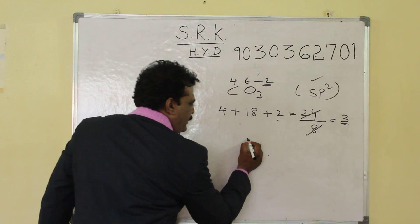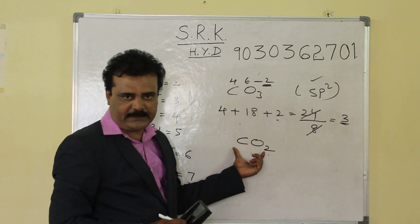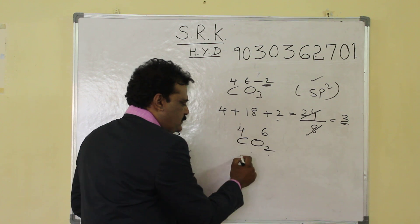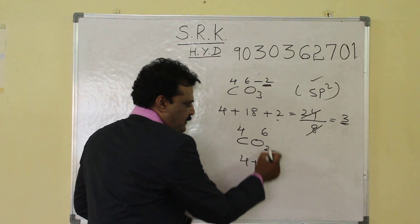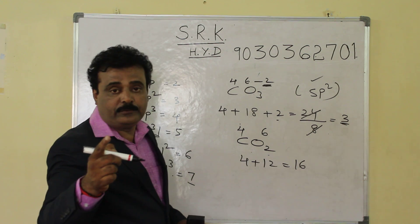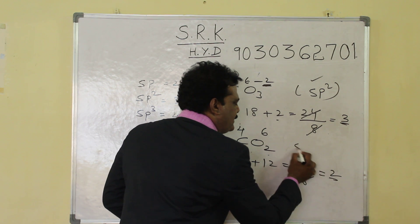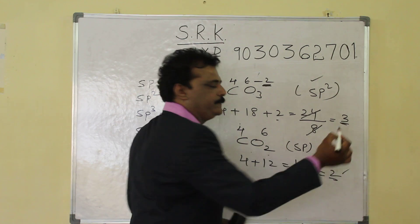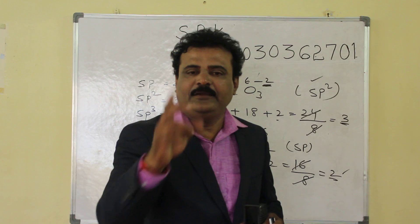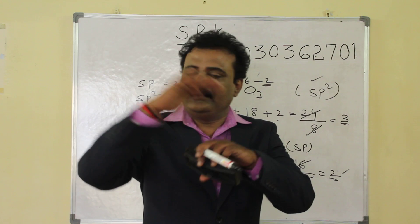One more example: carbon dioxide, CO2. Carbon belongs to the 4th group and oxygen belongs to the 6th group. One four is 4, two sixes are 12, total 16. 16 divided by 8 is 2, and the magic number 2 means SP hybridization.